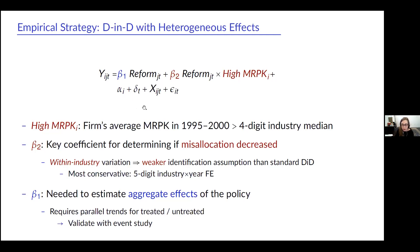I won't say too much about the identification strategy, except to note that to identify the direction of the effect on misallocation, we actually need fewer assumptions than a standard difference-in-differences strategy, because what we really care about is beta 2. We can identify beta 2 even if we include five-digit industry by year fixed effects to account fairly non-parametrically for differential time trends by industry. However, we're also interested in aggregate effects, so we want to identify beta 1, which requires the standard parallel trends identification assumption.